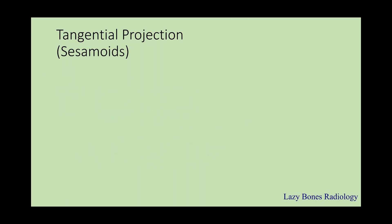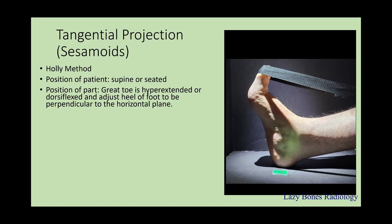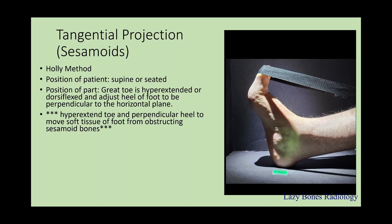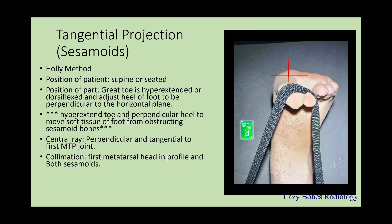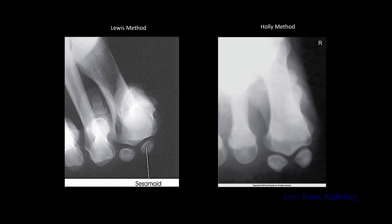Next is the tangential projection of the sesamoid bones — this time known as the Holley method. Position of the patient is supine or seated, so this is the opposite from the Lewis method. Position of the part: the great toe is hyperextended or dorsiflexed and adjust the heel of the foot in order to be perpendicular with the horizontal plane of the IR. Make sure to hyperextend the toe and keep the heel perpendicular to remove soft tissue from obstructing the sesamoid bones. Centering is perpendicular and tangential to the first MTP joint. Collimate the first metatarsal head in profile and both of the sesamoid bones. SID is 40 inches, and remember to label correctly. Now let's look at the Lewis method and the Holley method. As you can see here, the sesamoid bones are both in profile. Depending on the patient's condition and how the patient is able to be positioned, either of the methods can be used.